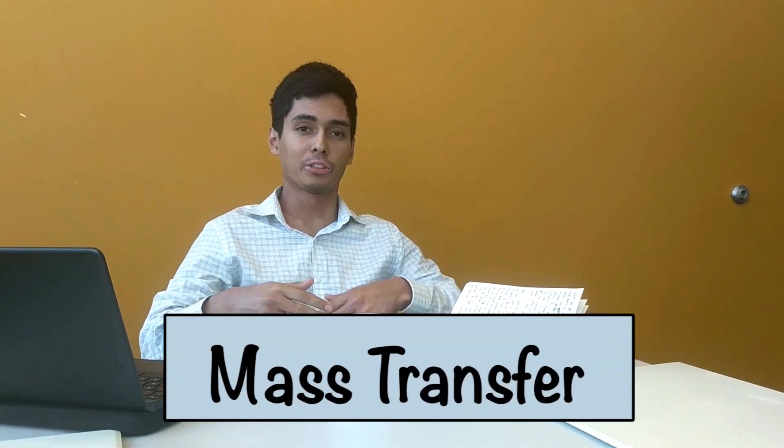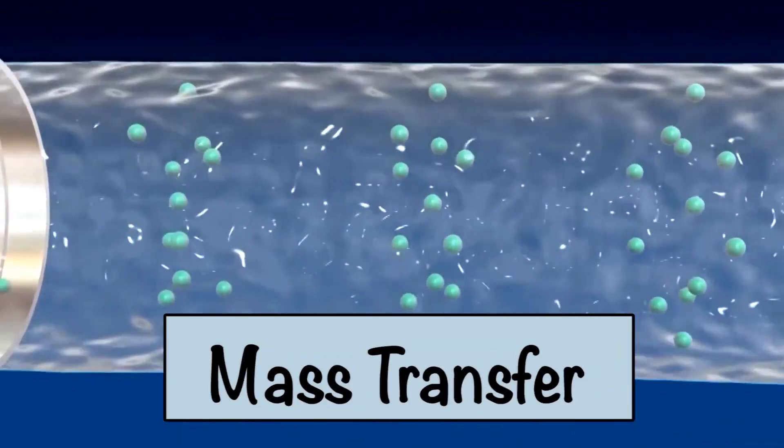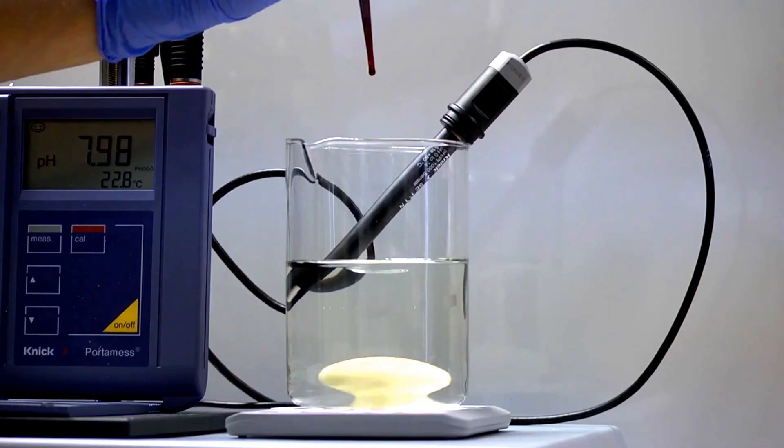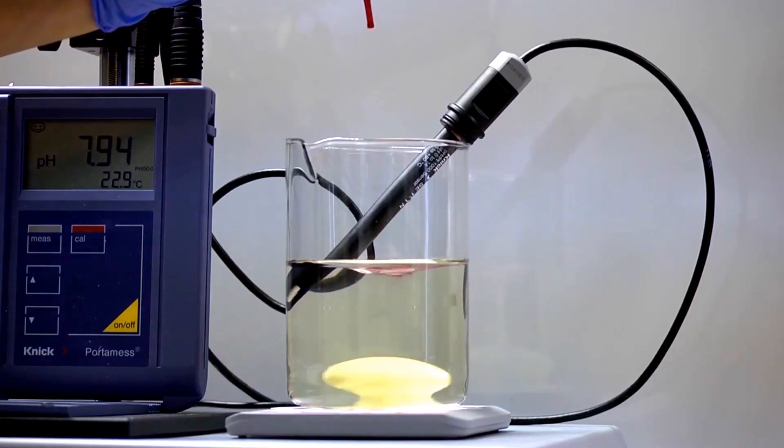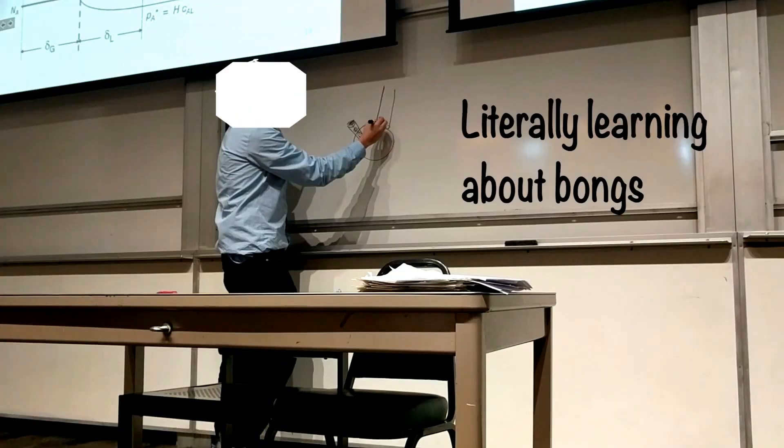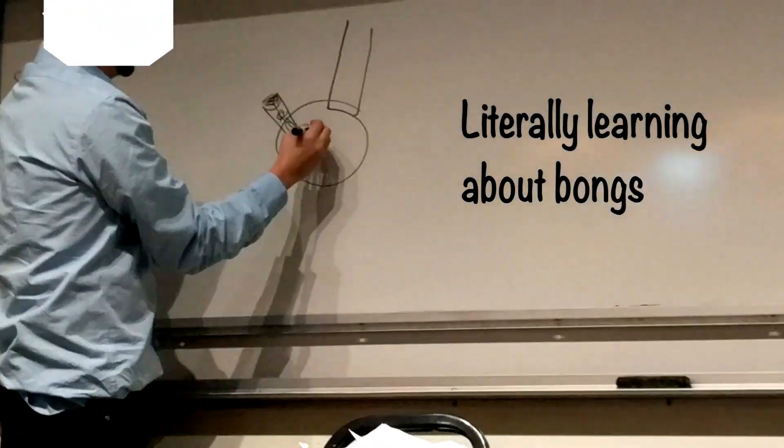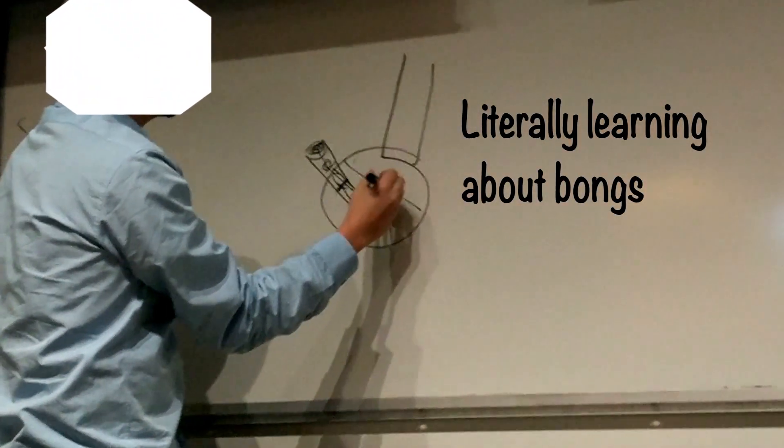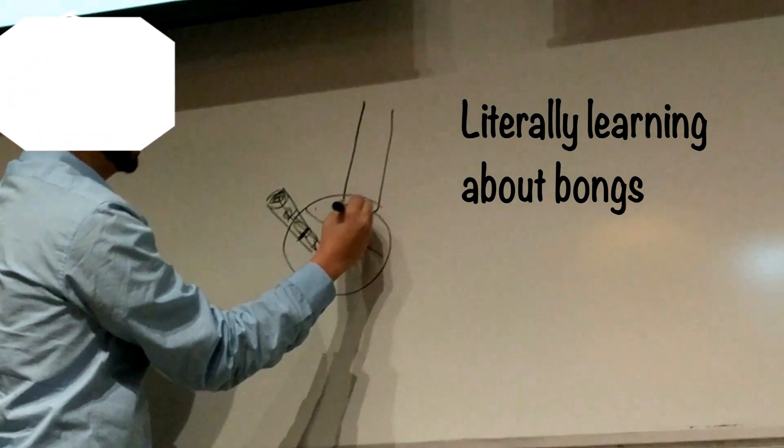Next up is another form of transport called mass transfer. Mass transfer deals with not heat but concentration. One example is if you have a cup of water and you add dye to it, you'll notice that it diffuses over time. And then over here you have a gas-liquid interface at the top, so only certain amounts of certain gas bubbles come out.